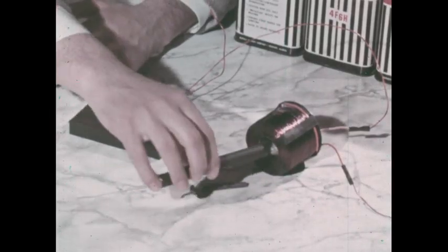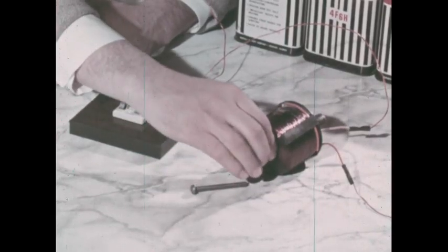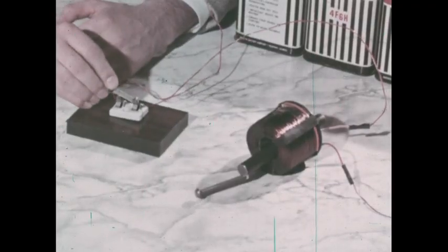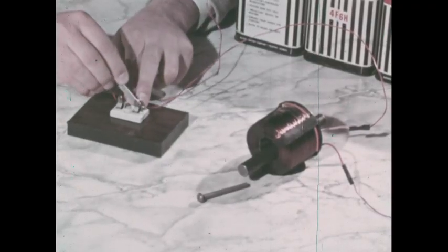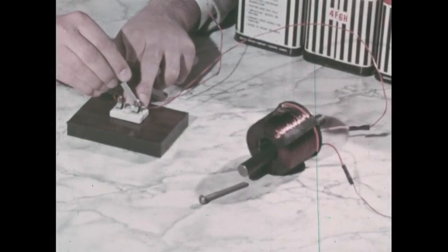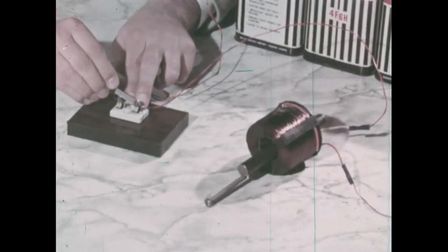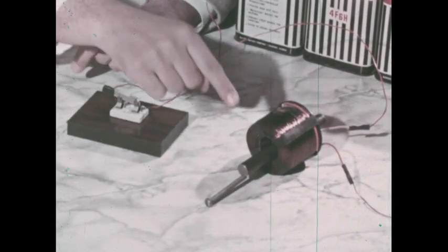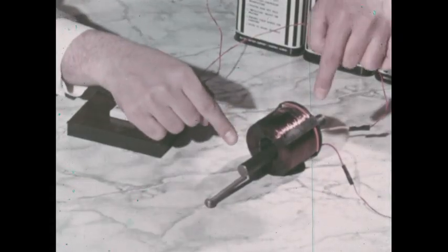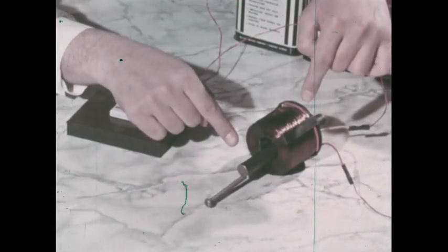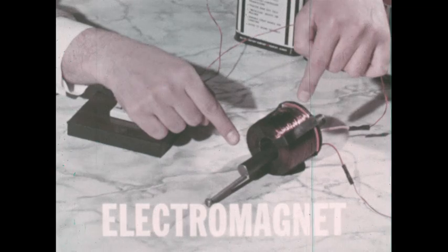When a rod of soft iron is placed inside the solenoid, it becomes magnetized when the current is turned on, but when the current is cut off, the rod ceases to be a magnet. A piece of iron encircled by a coil of wire carrying a current is an electromagnet.